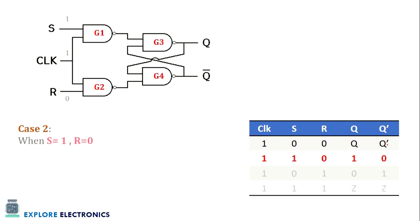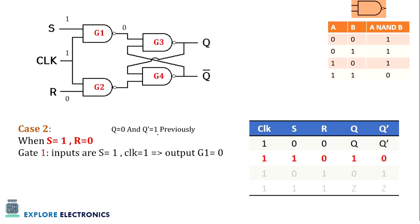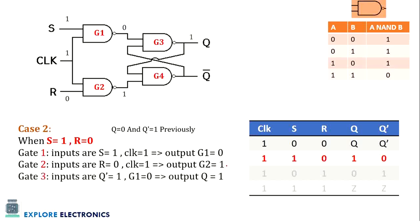Case 2: S is 1 and R is 0. From the previous case, Q is 0 and Q bar is 1. Gate 1, with S=1 and clock=1, gives output 0. Gate 2, with R=0 and clock=1, gives output 1. Gate 3 takes Q bar (previously 1) and G1 output (0); with inputs 1 and 0, the NAND output is 1, so Q becomes 1.